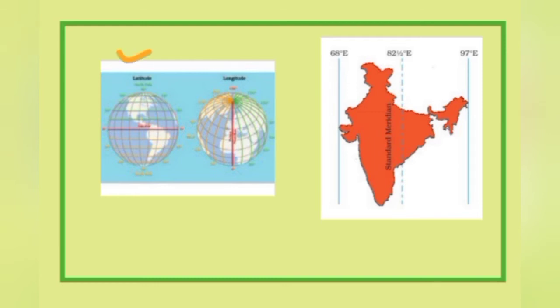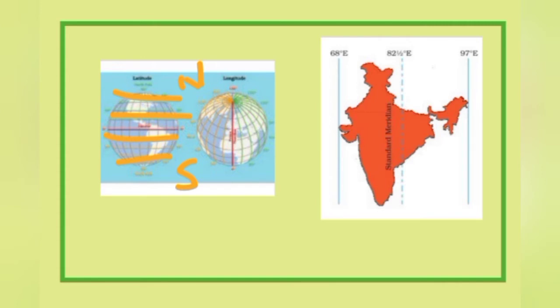The globe and the Earth are divided into hemispheres using latitude and longitude — imaginary lines drawn to define the location and time of any place. Latitudes are horizontal lines, and longitudes are vertical lines. When we talk about latitude, we think of parallel lines running in the north-south direction. Longitudes join from one pole to the other, running in the east-west direction.